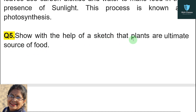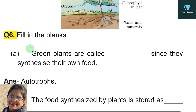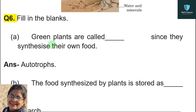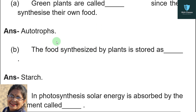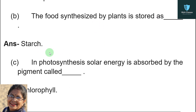Question number five: with the help of a sketch, show that plants are the ultimate source of food. You can draw this diagram. Question number six — fill in the blanks: green plants are called __ since they synthesize their own food. Answer: autotrophs. The food synthesized by plants is stored as __. Answer: starch.